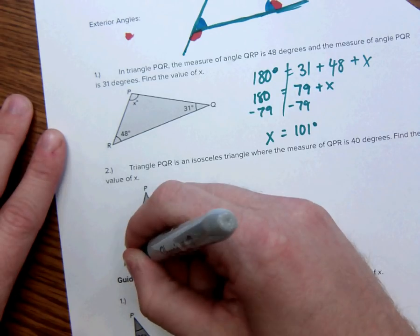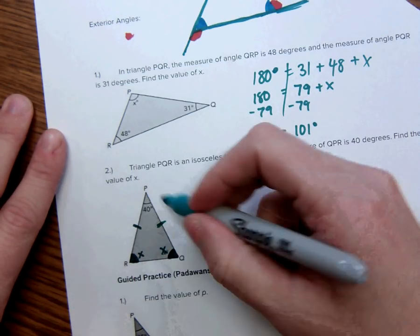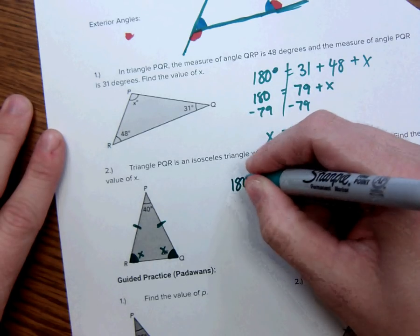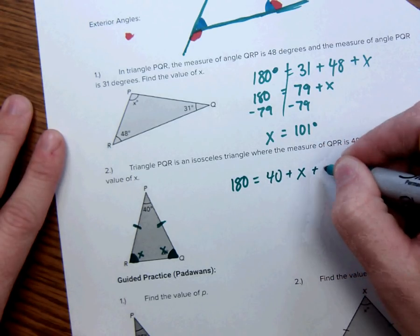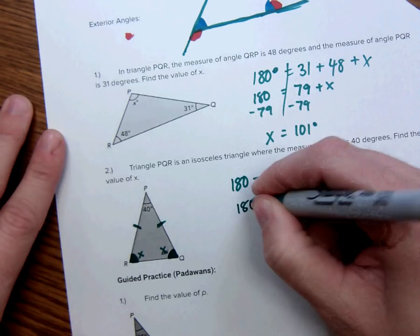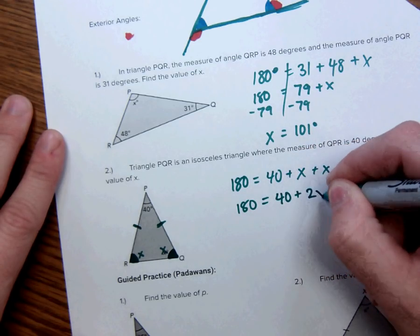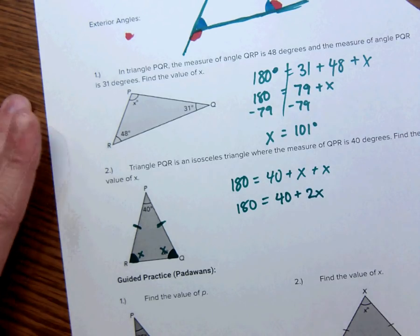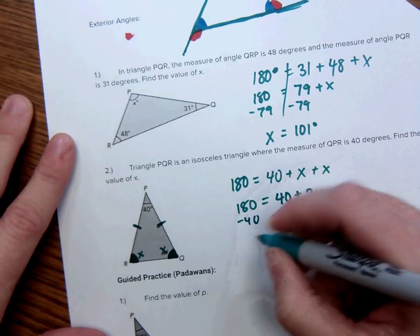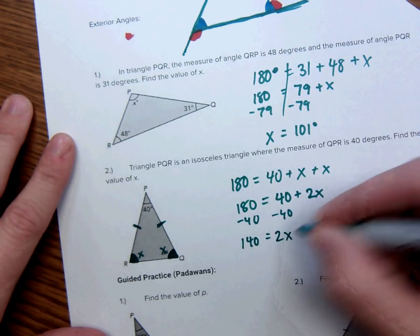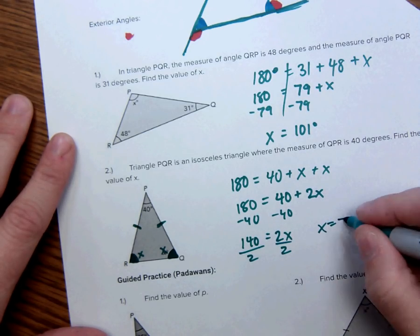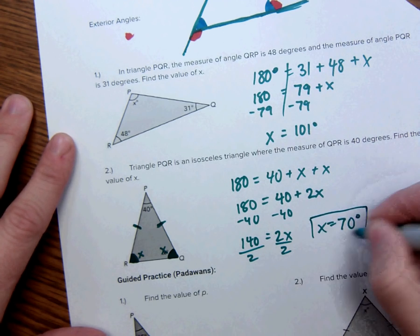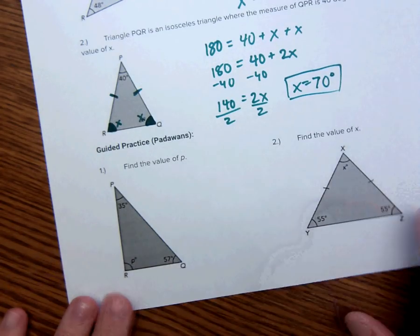This is X, so is this. So, if I look at all the angles of this triangle, I get 180 degrees is equal to 40 plus X plus X, or 180 is equal to 40 plus 2X. I can solve that. Subtract 40. I get 140 is equal to 2X. Divide by 2. That means X is equal to 70 degrees. All right, and you may do these two right here.